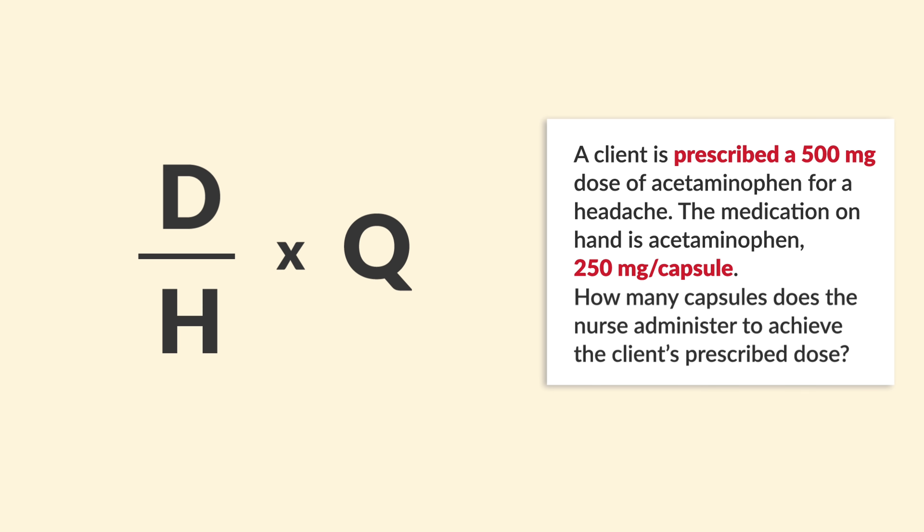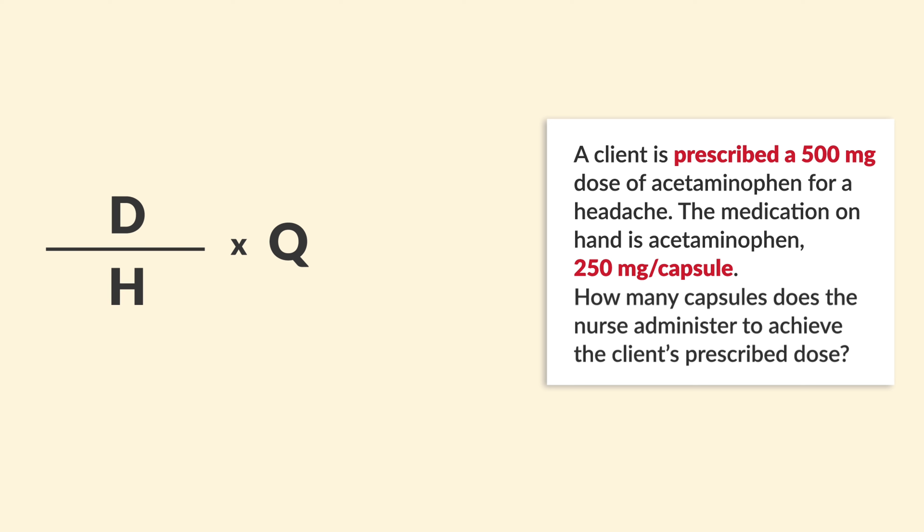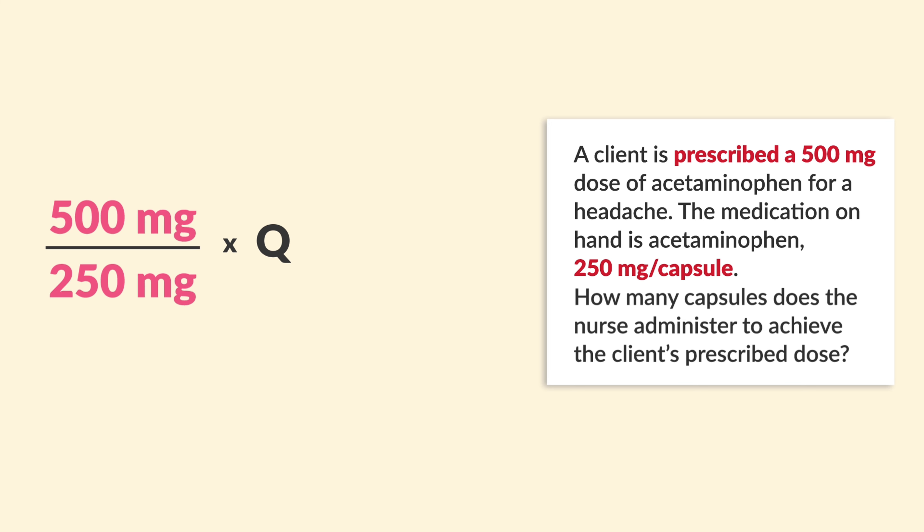Okay, so let's set this up. D over H — drinks around the house — times the quantity. So D is 500, over H, what you have on hand, which is 250.